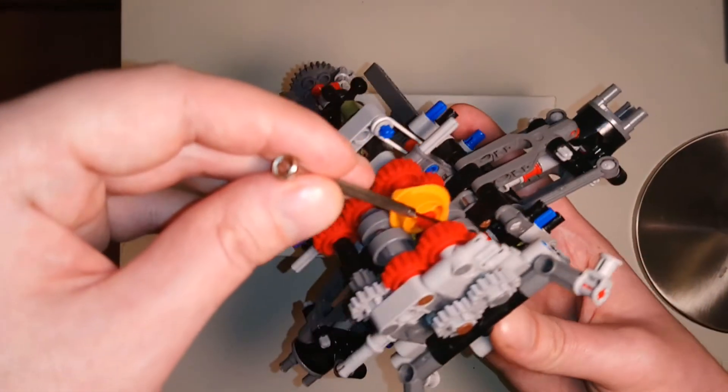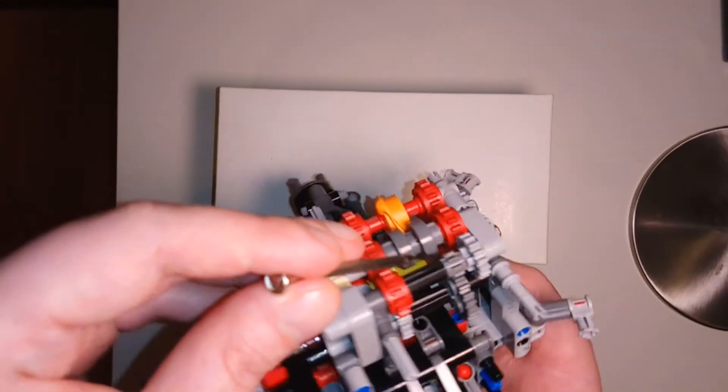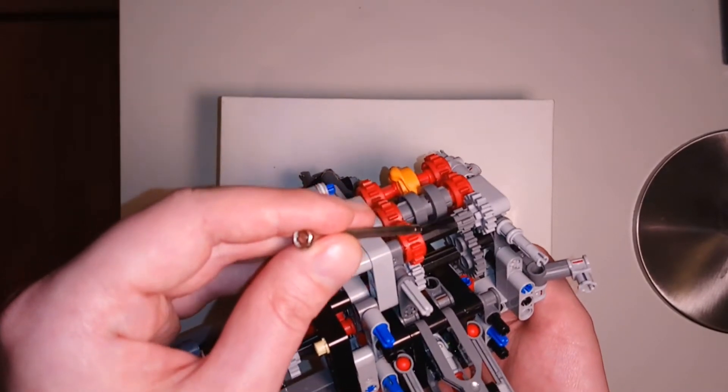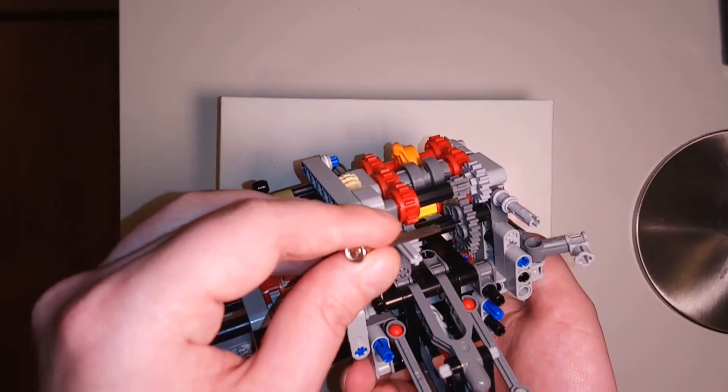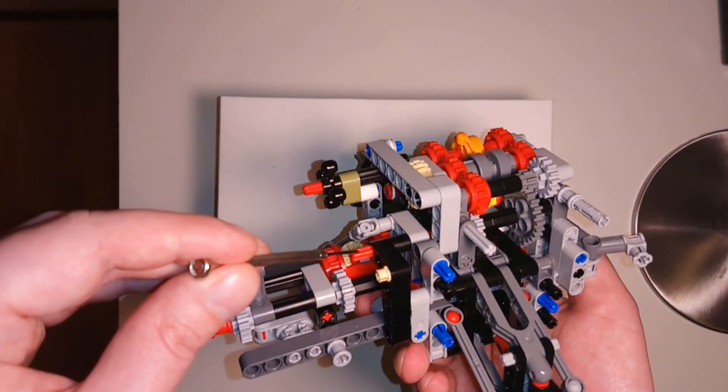Then it follows the path via the red gears, into the gray gear, and to the tiny dark gray gear, and into the largest dark gray gear, and exits from the output shaft.